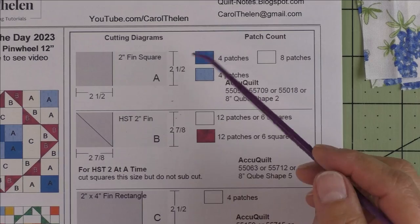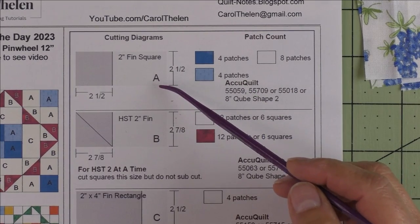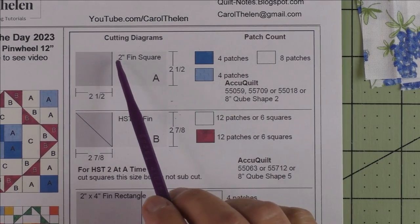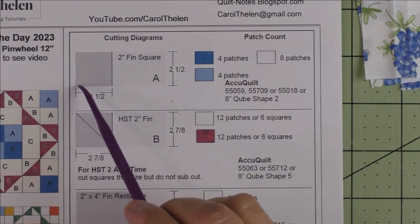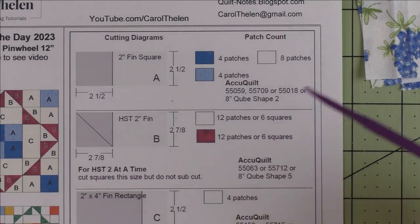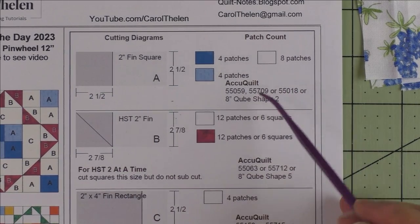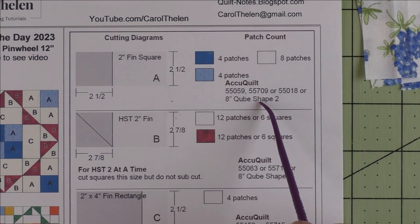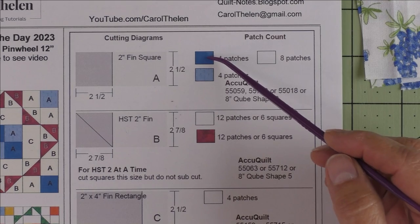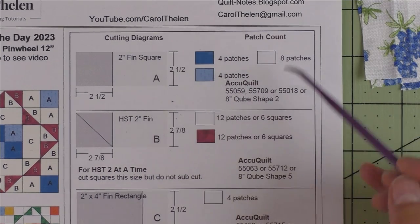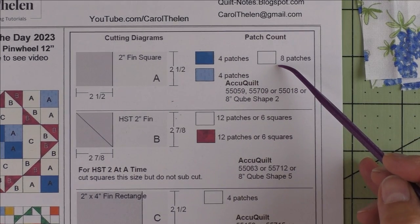Here are the patches. There are three patches. Patch A is a 2 inch finished square. For rotary cutting we're going to cut 2.5 inch squares. If you have the AccuQuilt, you can use these dies to get your 2.5 inch squares. We'll need four squares of each of the blue fabrics and eight squares of the background fabric.